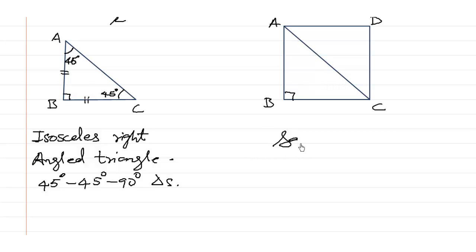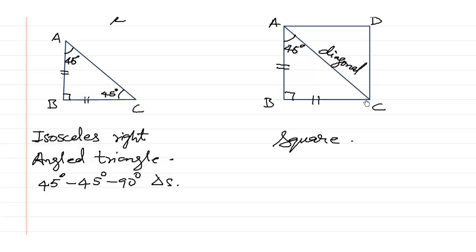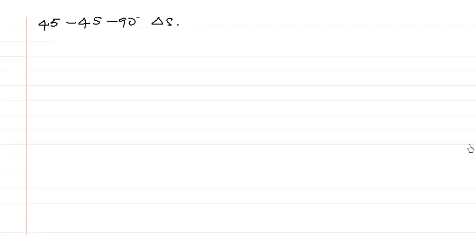Similarly, if a square is given and the diagonal is given or asked, we can say that triangle ABC — since AB and BC are equal — is a 45, 45, 90 degree triangle. So 45, 45, 90 degree triangles are also used in squares.